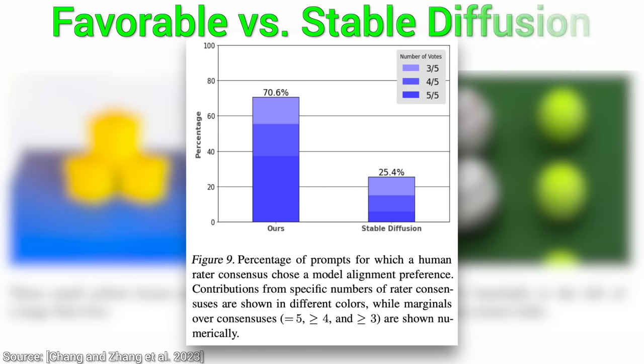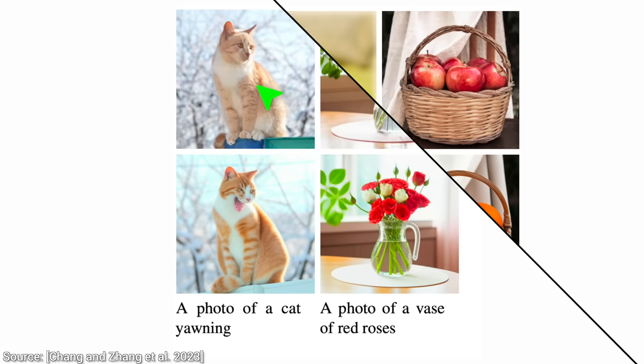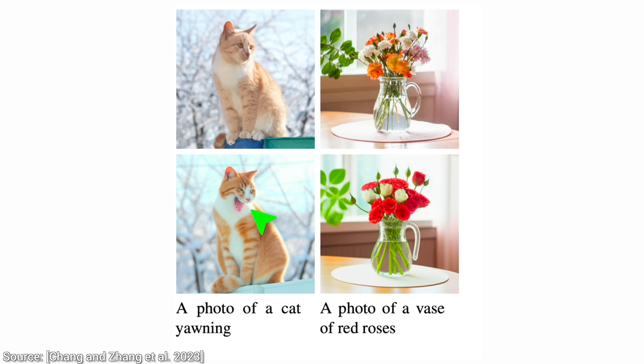I also love how it combines all of these concepts together. For instance, we can do mask-free editing while keeping the composition of the original image the same. This way, we can transform our cat into a dog, change a small basketball into an American football, make our cat yawn, or even change these flowers.